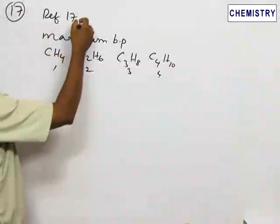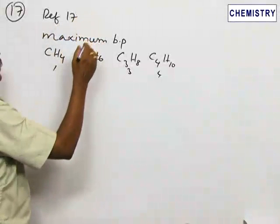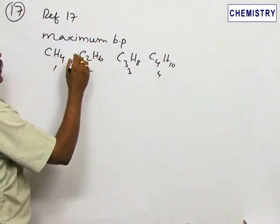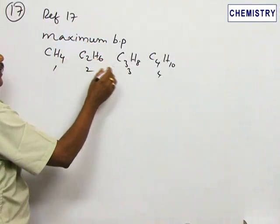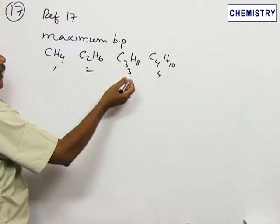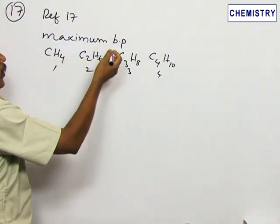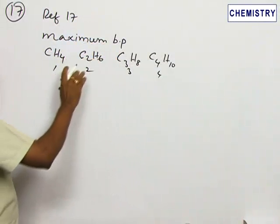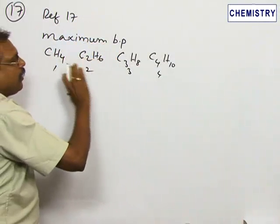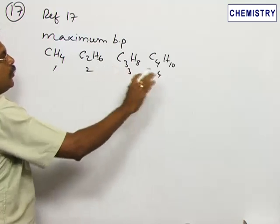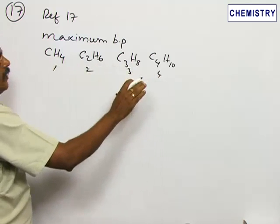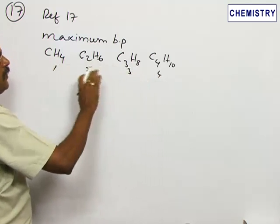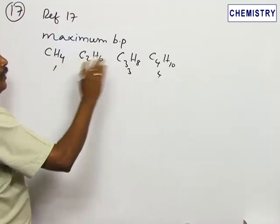Number 17 and reference 17. Here, we have to find out the maximum boiling point of the alkane and which alkane has the maximum boiling point. We know very well as the carbon chain grows, number of carbon atoms increases, the boiling point physical property also will increase.